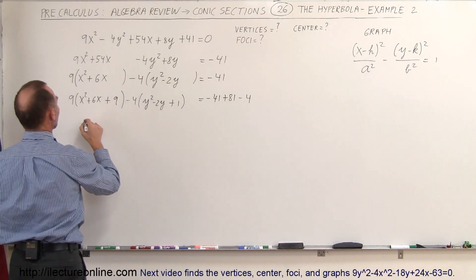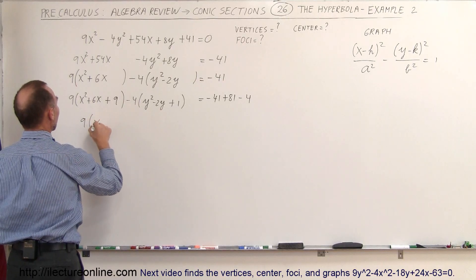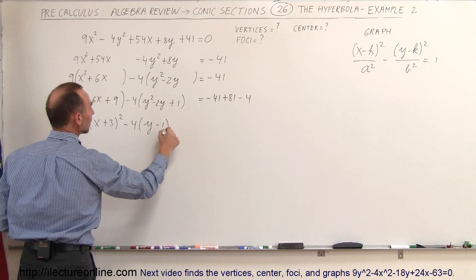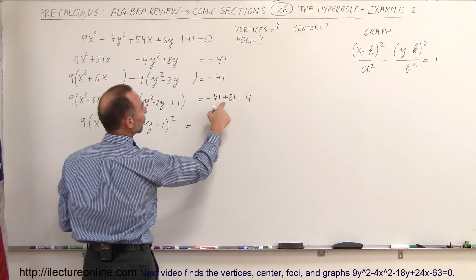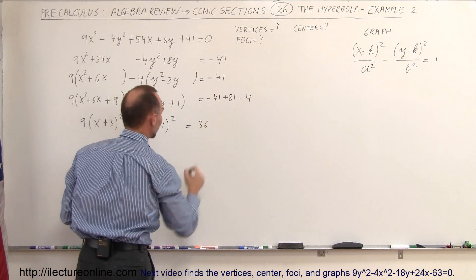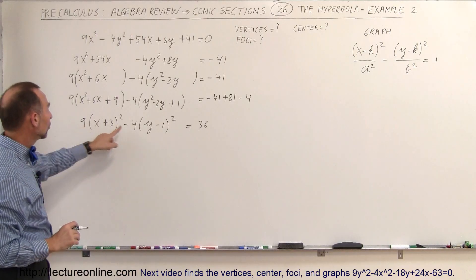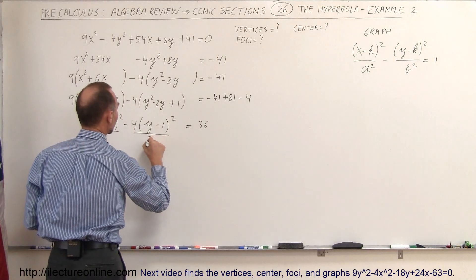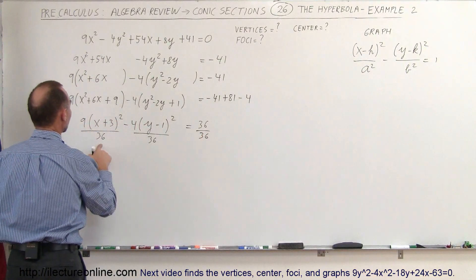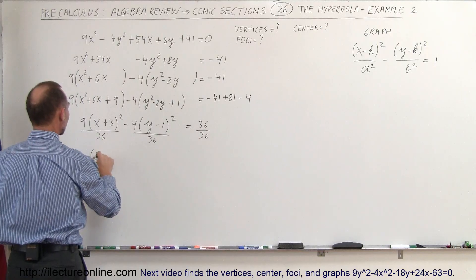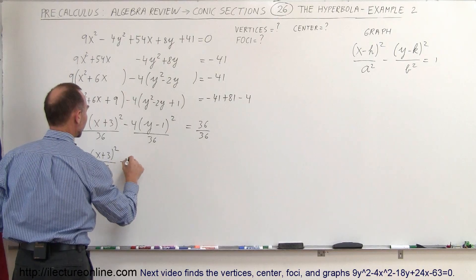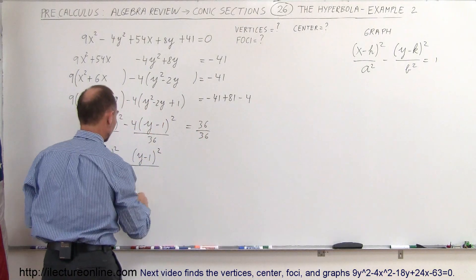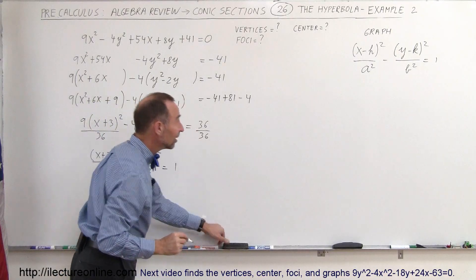Now we can write each group as the square of a binomial: 9 times (x plus 3) squared, minus 4 times (y minus 1) squared, equals minus 41 plus 81 minus 4, which is 36. Dividing both sides by 36 gives us (x plus 3) squared over 2 squared, minus (y minus 1) squared over 3 squared, equals 1. Now we have the exact standard form.